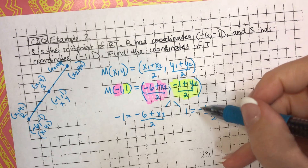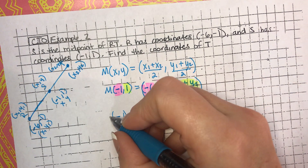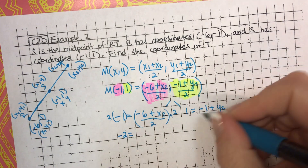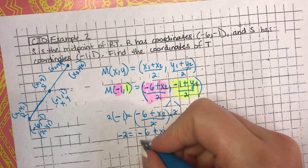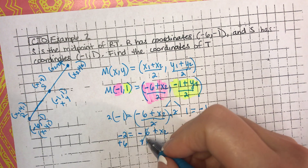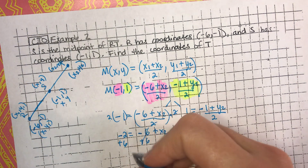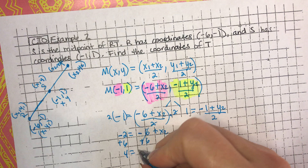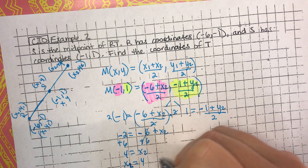We'll just solve each equation one at a time. This is all divided by 2, so the inverse operation would be to multiply it all by 2 - both sides. We go 2 times negative 1, which is negative 2, equals - those canceled - so we're left with negative 6 plus X2. We're trying to get this by itself, so we do the inverse: add positive 6 to both sides. Negative 2 plus 6 would be 4 - the signs are different, you take the difference; 6 is bigger than 2, so it's positive 4 - equals X2. So X2 equals 4.